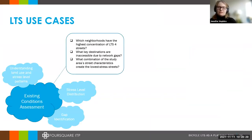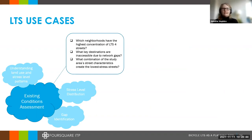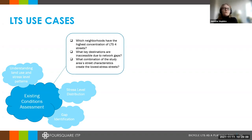I've come up with some LTS use cases — examples from this project and others. One of the first is using LTS for an existing conditions assessment. In this case, you'd be trying to understand the impact of land use on stress level and different patterns across the city. You're also looking at stress level distribution — where's the highest concentration of LTS 4 streets — and looking for gaps in the network: what key destinations are inaccessible due to network gaps. Essentially, you're trying to find a pattern to use for future planning.